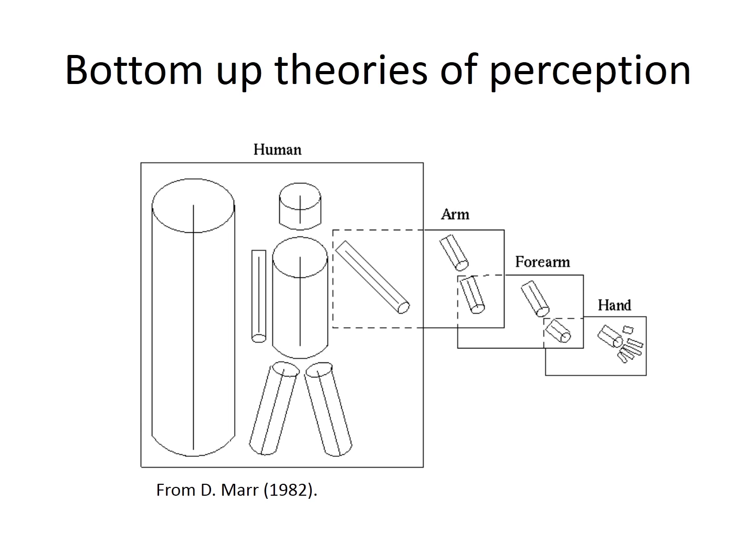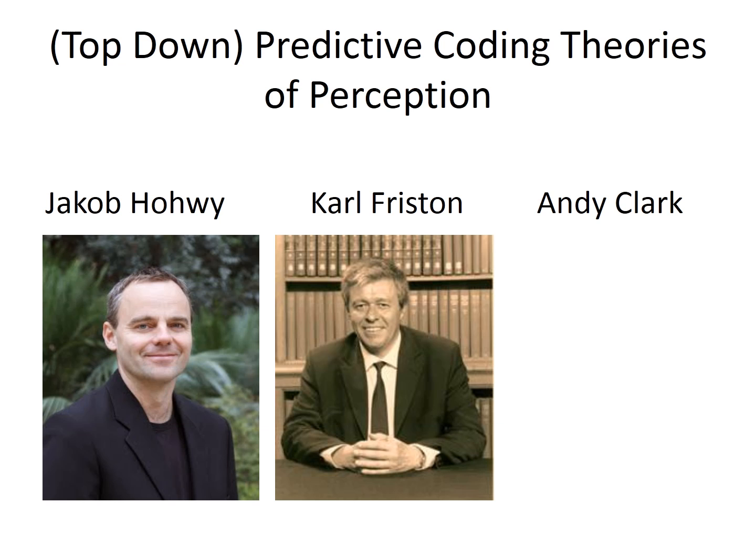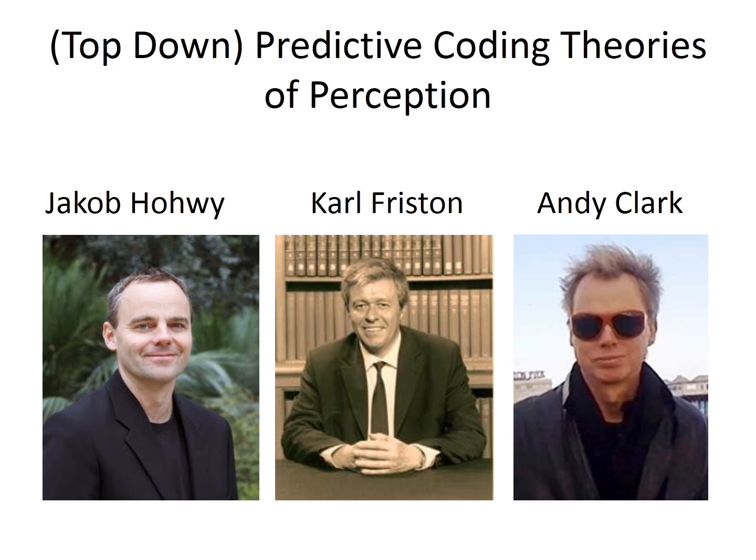On bottom-up theories of perception, such as the one proposed by David Marr, we build our percepts from the bottom-up, moving from edges to shapes and so on to build a three-dimensional scene. On top-down theories of perception, such as those proposed by Jakob Hoey, Karl Friston, and Andy Clark, this model gets turned on its head.